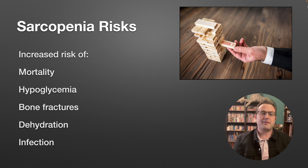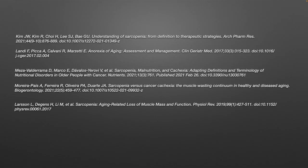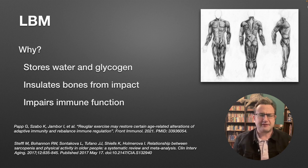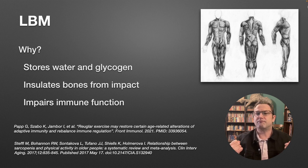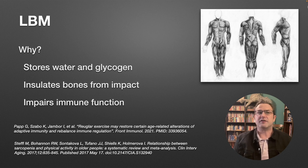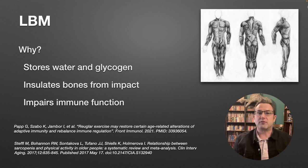Sarcopenia is one of the things that really keeps gerontologists up at night. It increases the risk of mortality, hypoglycemia, bone fractures, dehydration, and infection. That's because lean body mass is a biological sponge — it supports immune function, insulates bones from impacts so more muscle mass means less risk of injury or bone breakage when falling, and it stores water and glycogen, helping regulate hydration and blood sugar. Having a good store of lean body mass is really essential to long-term health, especially in an older person.